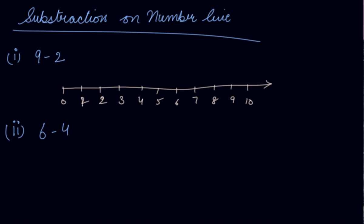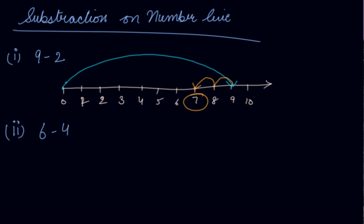Now you need to subtract. In addition, we used to jump to the first number — here that is 9. So we will jump from 0 to 9. If we had to add 2 to it, we would jump forward. But if we need to subtract 2 from it, we take a backward jump from 9: two backward steps, from 9 to 8 and 8 to 7. So the answer is 7. In addition we take forward jumps; in subtraction, we take backward small jumps.